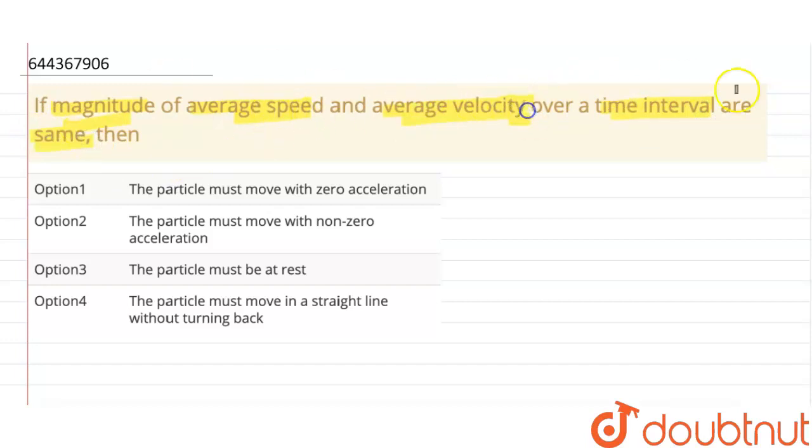Option 1: The particle must move with zero acceleration. Option 2: The particle must move with non-zero acceleration. Option 3: The particle must be at rest. Option 4: The particle must move in a straight line without turning back. So we have to comment on the options when it is said that average velocity and average speed are the same.